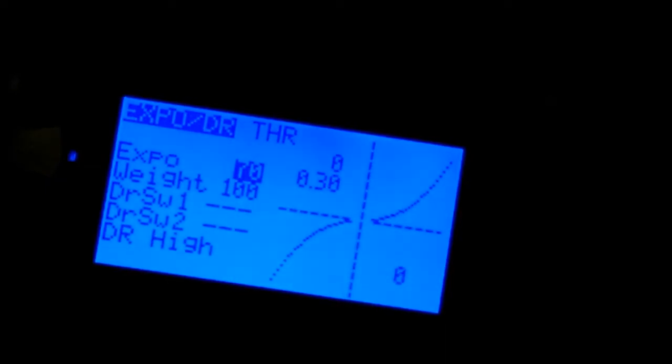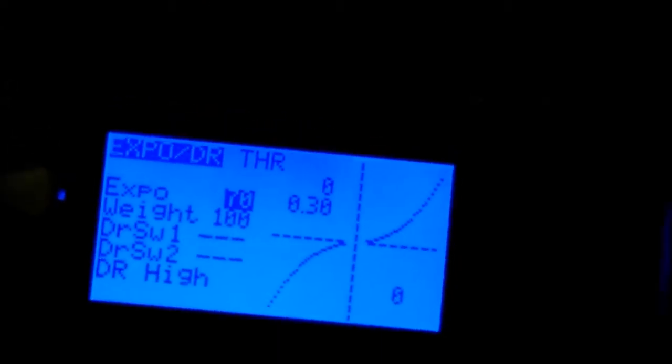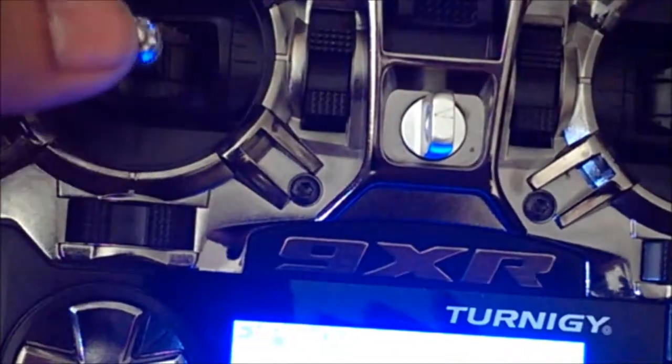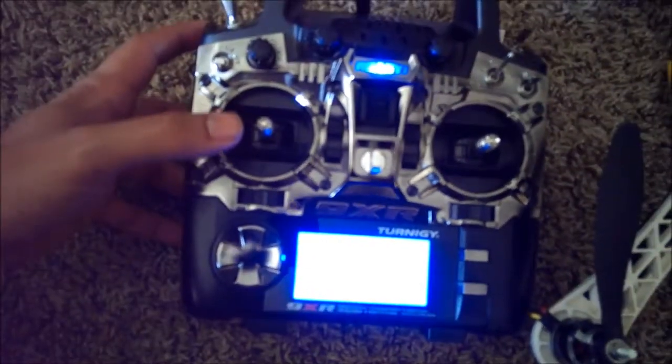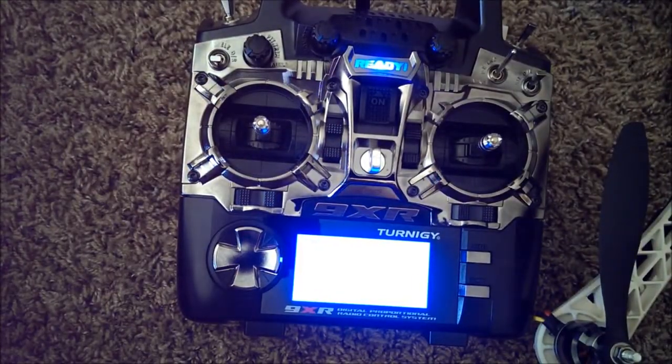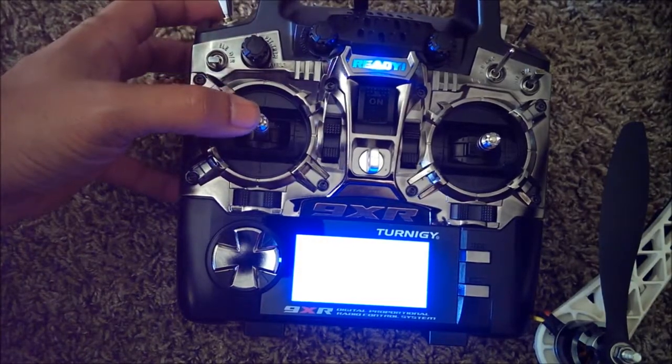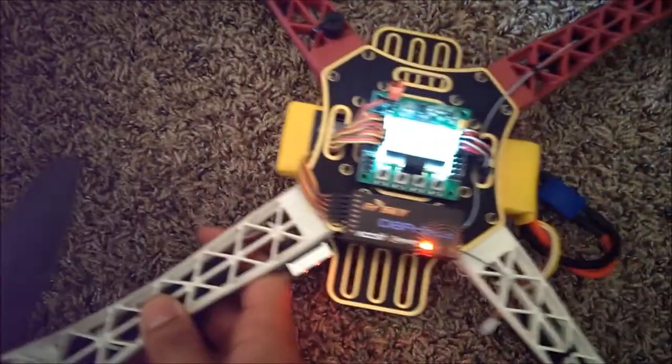Now, another thing that I found out when messing with this Expo... Because I was previously using a curve on this, not Expo for Throttle. Is that putting my Throttle dead center does not hover my quad. So being that I was messing around with curves before, I figured out where exactly the hover point is. So it's just above it. And let me show you what it looks like.